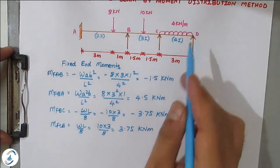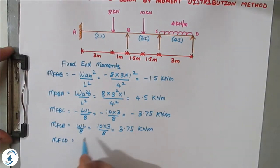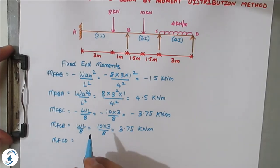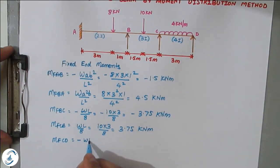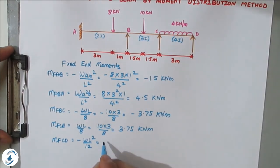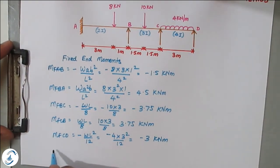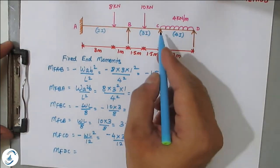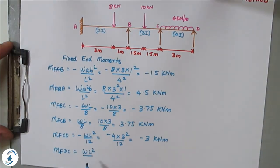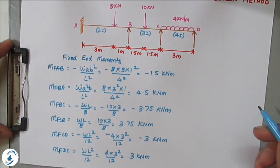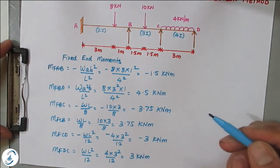For span CD, the loading is a UDL of 4 kN/m. The fixed end moment formula for UDL is W·L² / 12. MF_CD is anti-clockwise: minus 4 × 3² / 12 = minus 3 kN·m. MF_DC is clockwise: plus 4 × 3² / 12 = plus 3 kN·m. These are the six fixed end moments needed before proceeding.